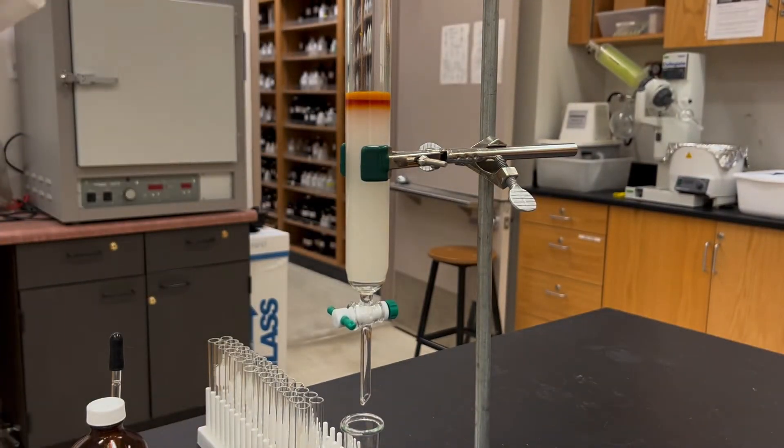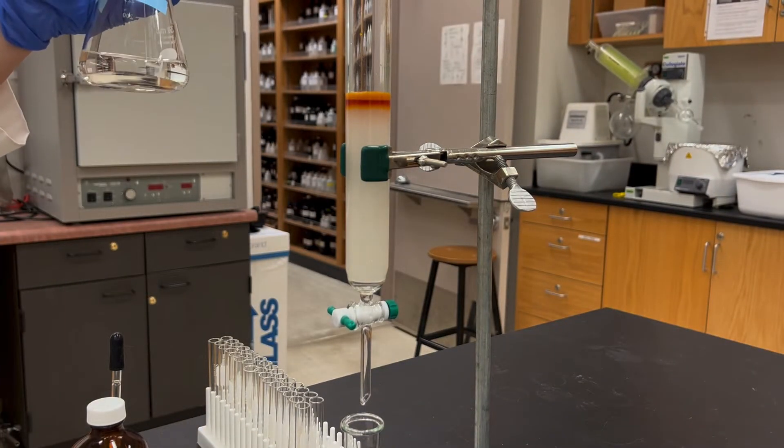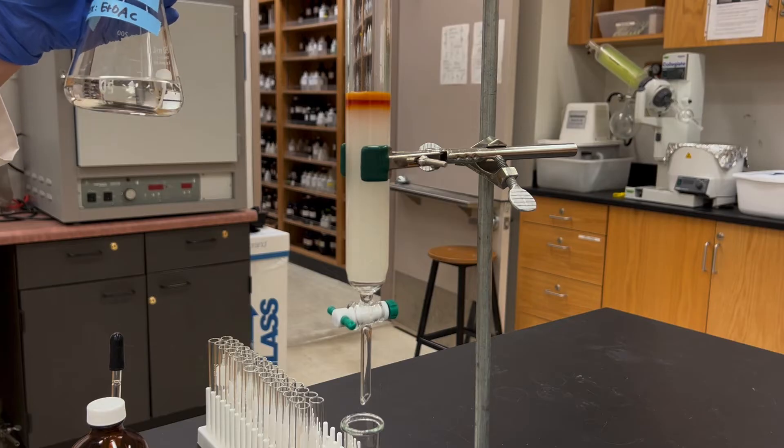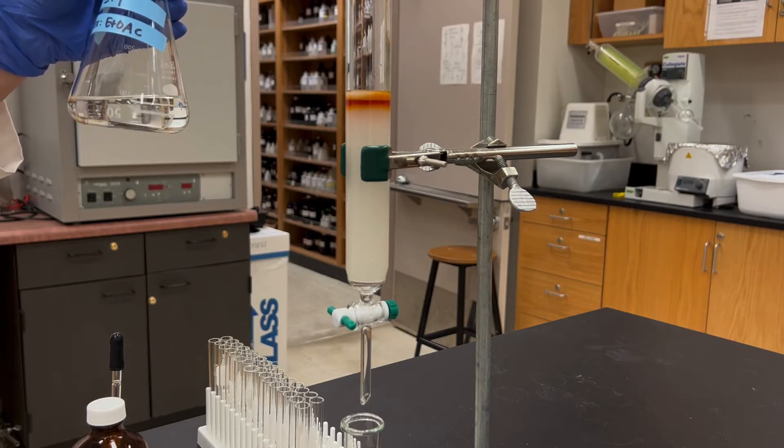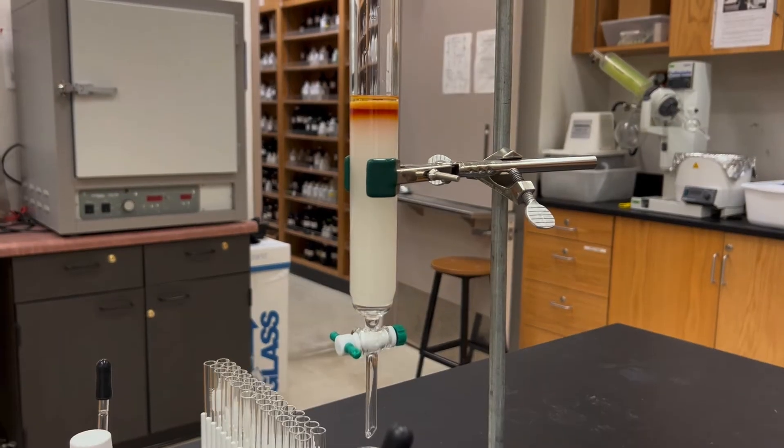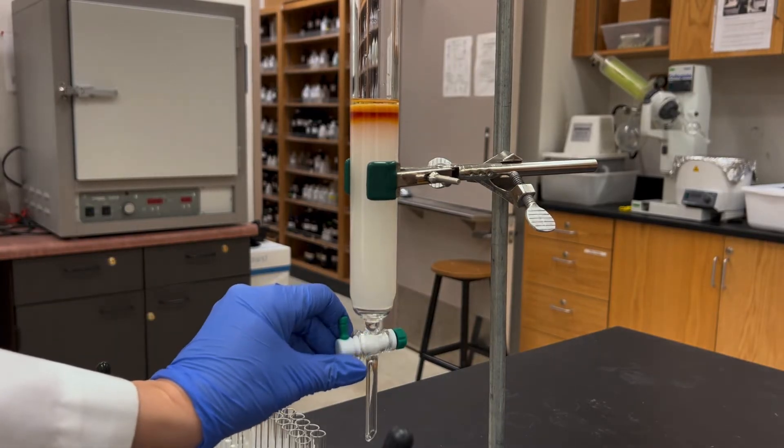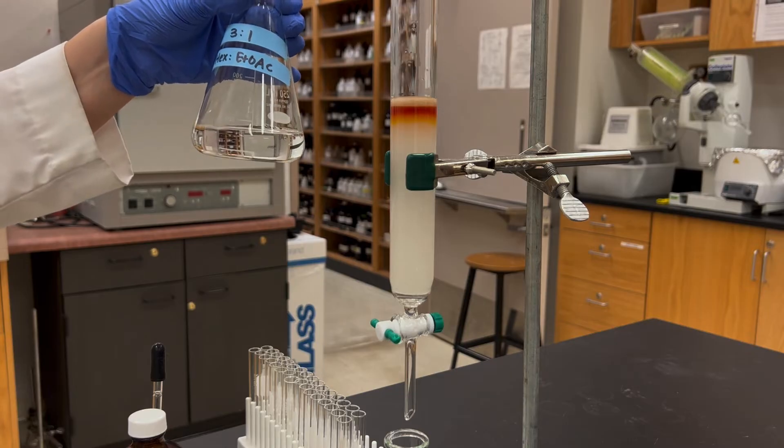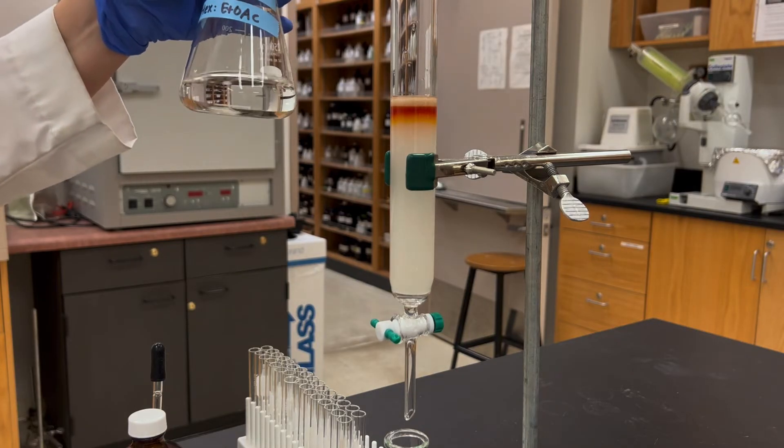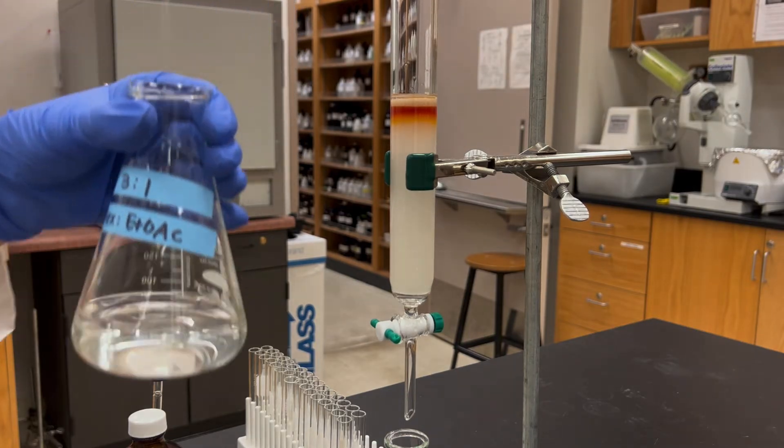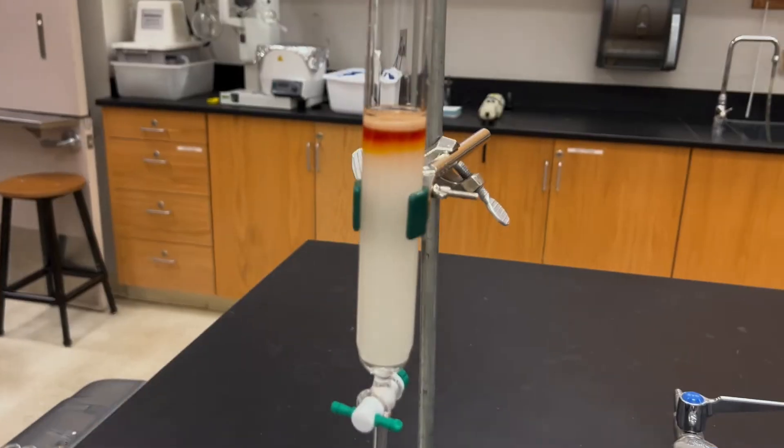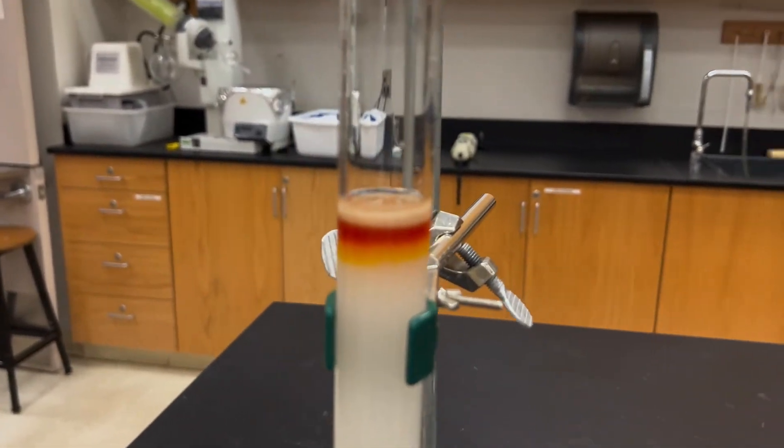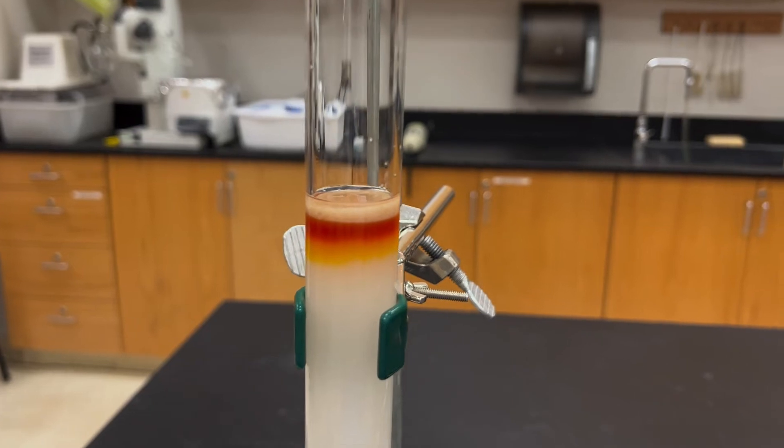Next I'll add some solvent to do a rinse and I'll be again really careful about how I add this to the column. I'm going to drip the liquid down the sides, rinse it down the sides, and then I'll again open up the stopcock and let that drain until the liquid just goes past the sand layer onto the column. I can do it a second time if I feel I need to and again let it drain until the liquid is right past the sand and to the top of the white part.